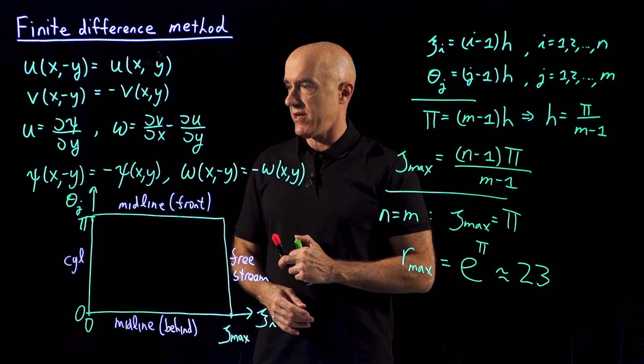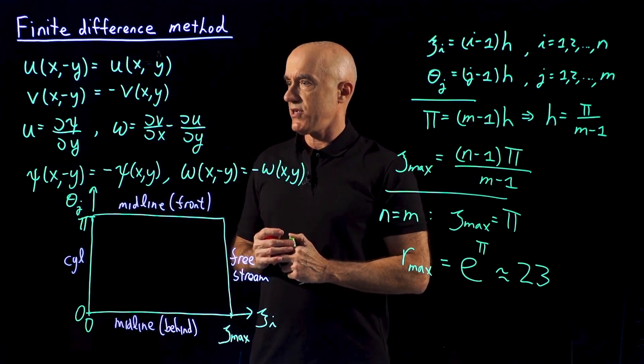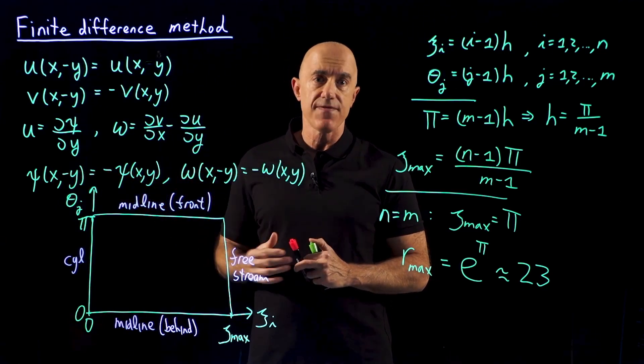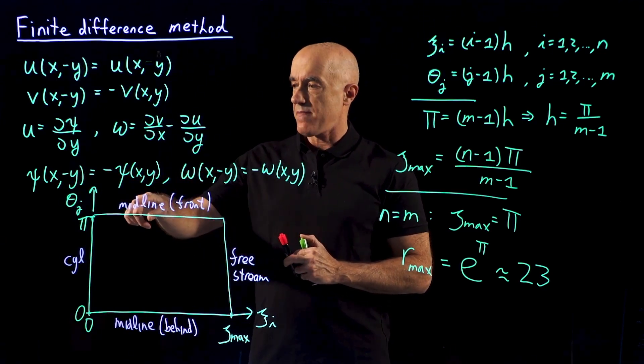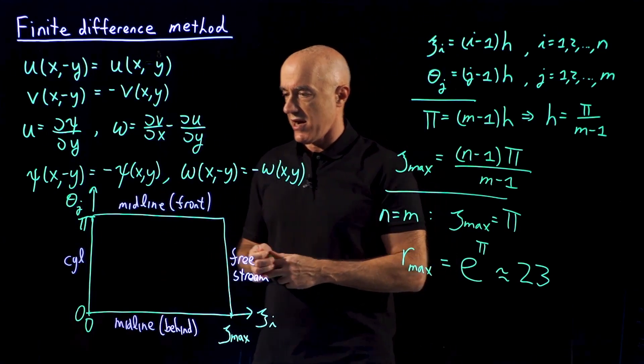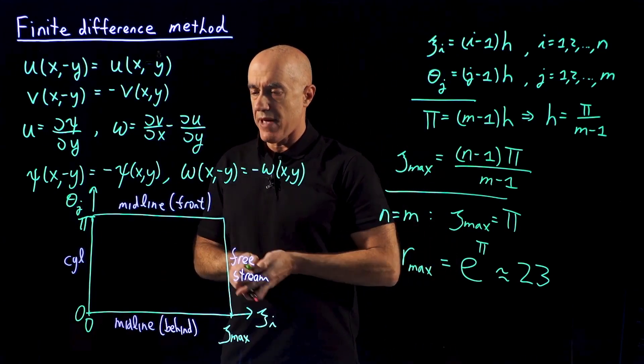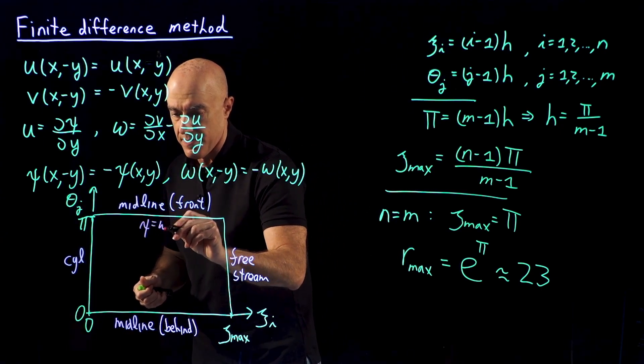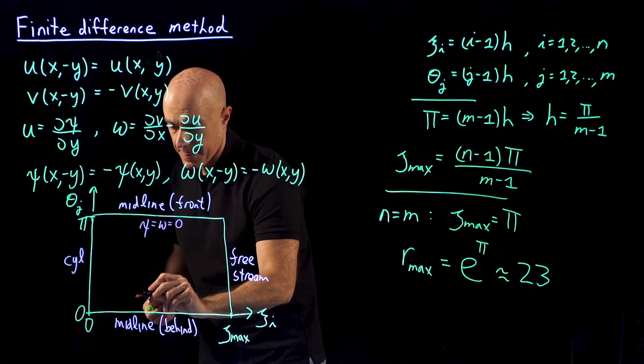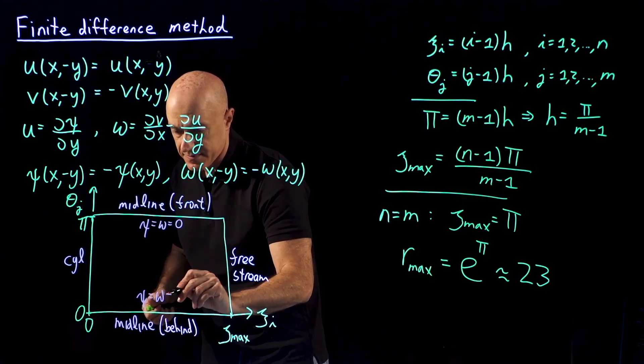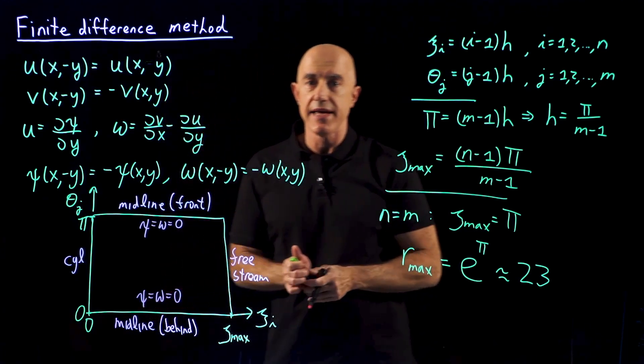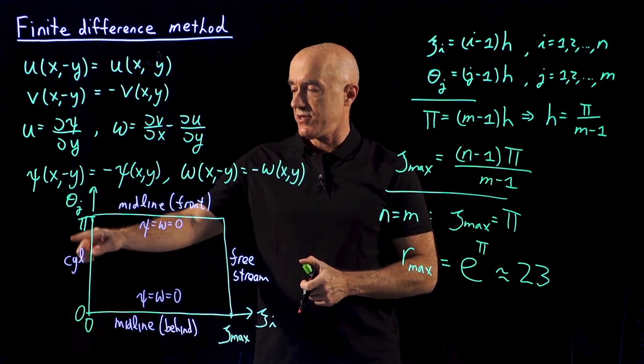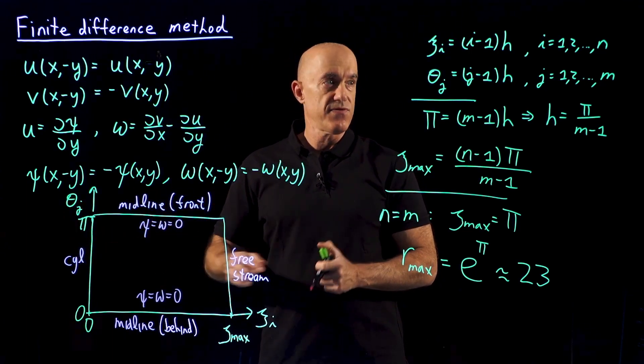We're going to need boundary conditions on the midline, the cylinder, and the free stream. The midline boundary condition is quite simple because ψ and ω are odd functions of y. So that means that on the midline here, ψ and ω have to be both 0, because they are odd functions of y. And this is that y=0.